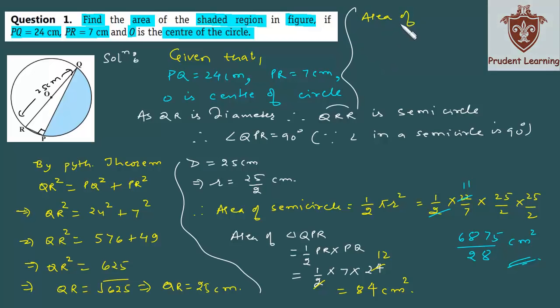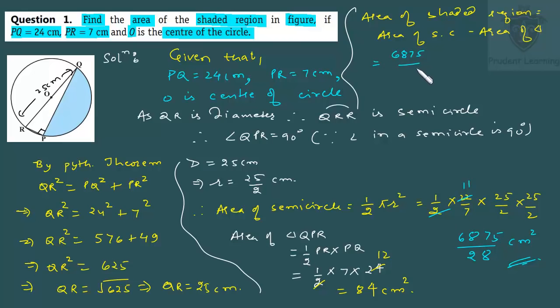So finally we have area of shaded region as area of semicircle minus area of triangle. You know which triangle. Let's substitute the values. We have area of semicircle as 6875 over 28 minus area of triangle is 84 cm squared. Here you take the LCM of 28. So you get 6875 minus 28 into 84 is 2352. And when you subtract these two, I'm talking about the numerator, you get 4523 over the denominator as 28. And the unit will be cm squared.